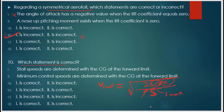Stalling speed increases as the center of gravity moves forward. Also, above 10,000 feet, stalling speed slightly increases. So stall speeds are determined with the center of gravity at the forward limit — this is correct.